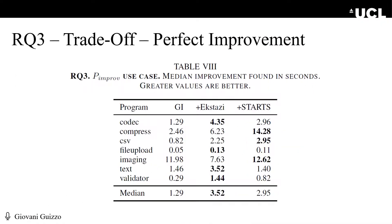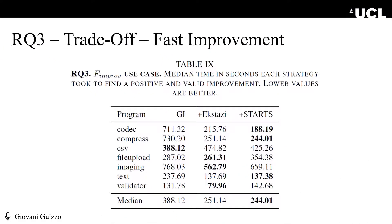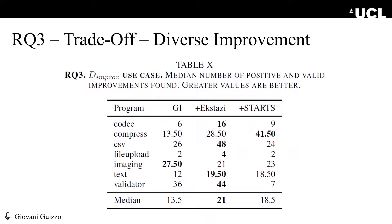To answer RQ3, we evaluated three GI application scenarios. In the first, the engineer is concerned with finding the best possible improvement: using Ekstazi provides the greatest runtime improvement for 4 out of 7 programs, whereas STARTS yields the best results for 3 out of 7. The second scenario is finding a valid patch with positive improvement as fast as possible; here STARTS and Ekstazi showed similar results, but STARTS was a bit faster. The third scenario concerns diversity of patches — which strategy provides more valid and improving patches — where Ekstazi showed the best results for 5 out of 7 programs.